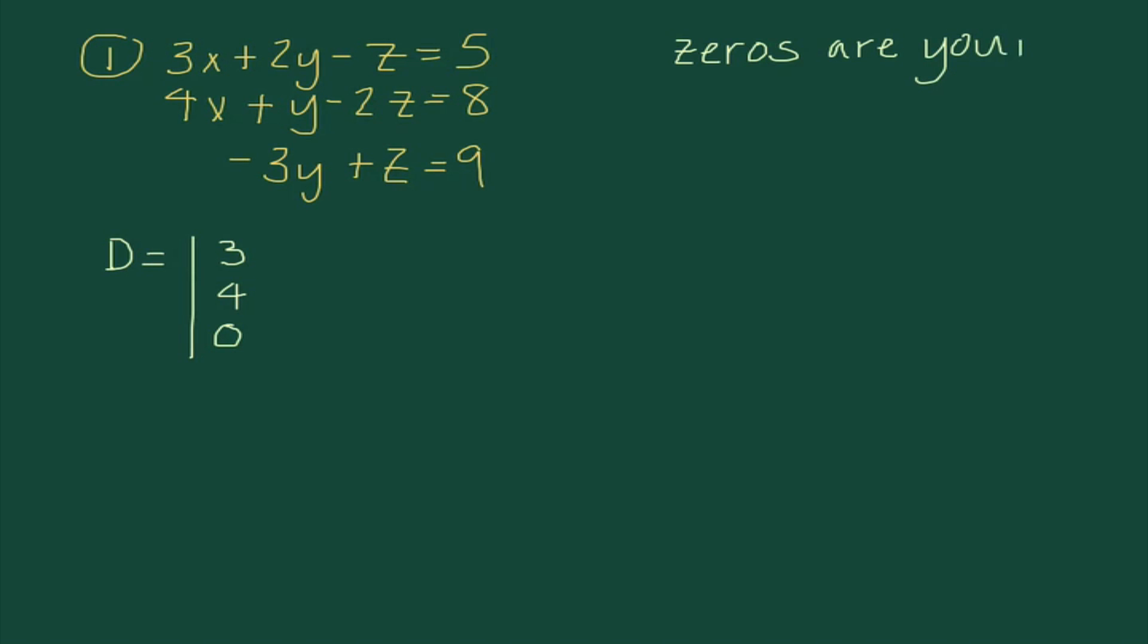And, they are because it's going to make life so much easier for us because we know when we multiply, anything times zero is zero. Okay, second column, my y coefficients. That would be 2, 1, and negative 3. The third column are our z coefficients. So, negative 1, negative 2, and 1. Now, I'm going to go ahead and rewrite my first two columns.